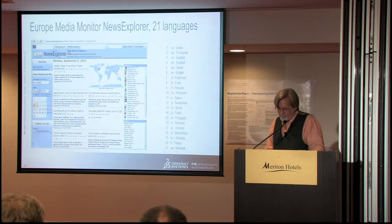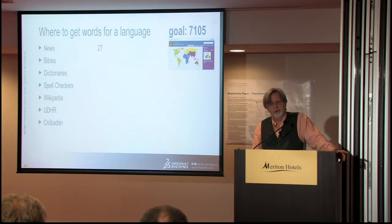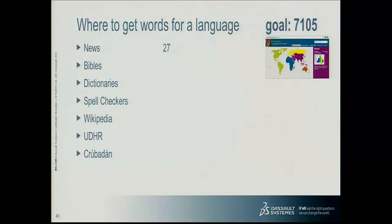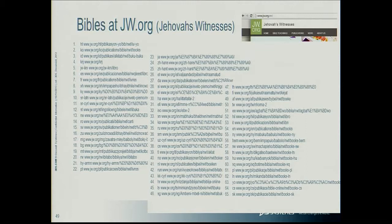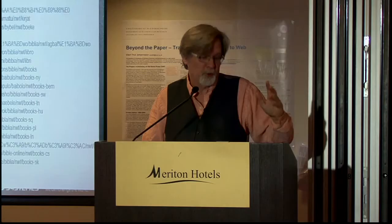This is also a very rich resource for lexicography and natural language processing work. But again, there are only 21 languages. So looking at our goal of 7,000 languages, in news we have 27. Let's look at Bibles. You can find a lot of Bibles — the Jehovah's Witnesses and a number of other religious groups want to distribute Bibles, and they've done this in a number of languages. At the JehovahWitnesses.org site, you can find Bibles in 65 different languages. Some of these Bibles are incomplete — sometimes they only have the New Testament or just one or two books.